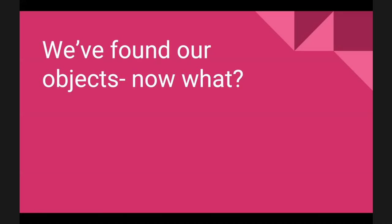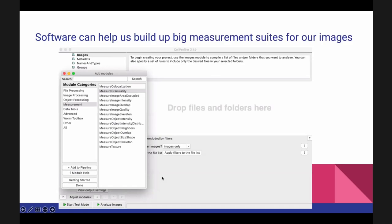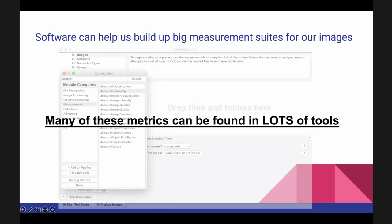Once you've found your objects — which is absolutely the hardest part of bio-image analysis — everything else is relatively straightforward. Typically you want to measure something. We recommend taking hundreds or thousands of measurements per cell. CellProfiler offers many different kinds of measurements, and each measurement module produces not just one measurement but a whole suite of related ones that you can pick and choose from.